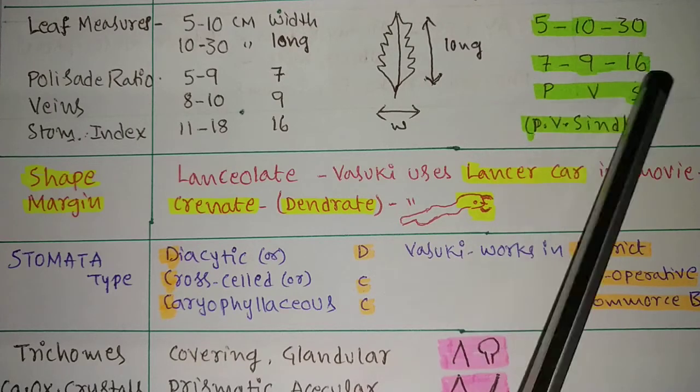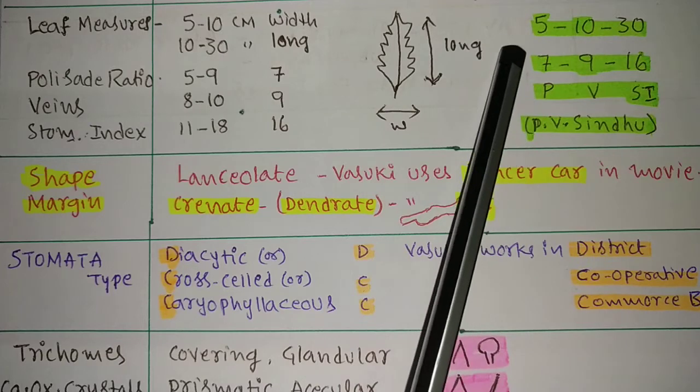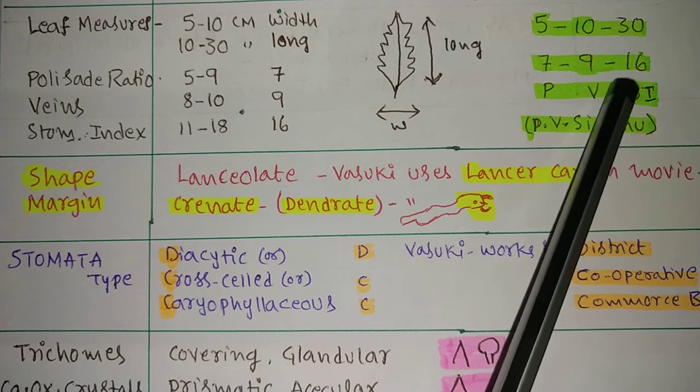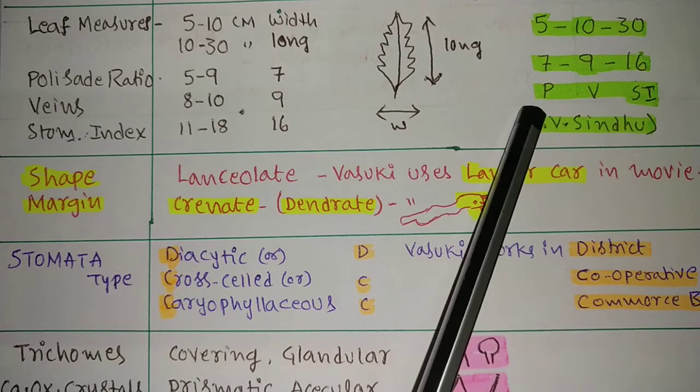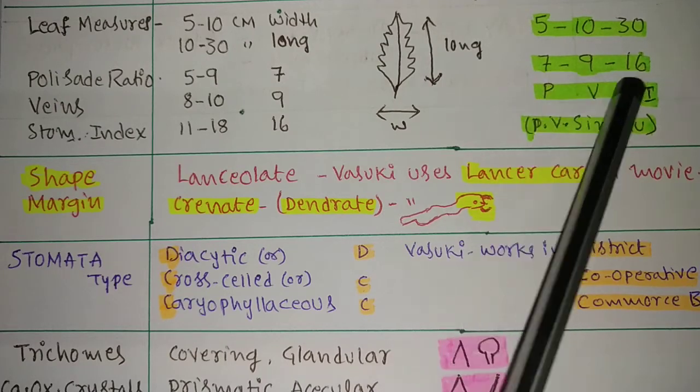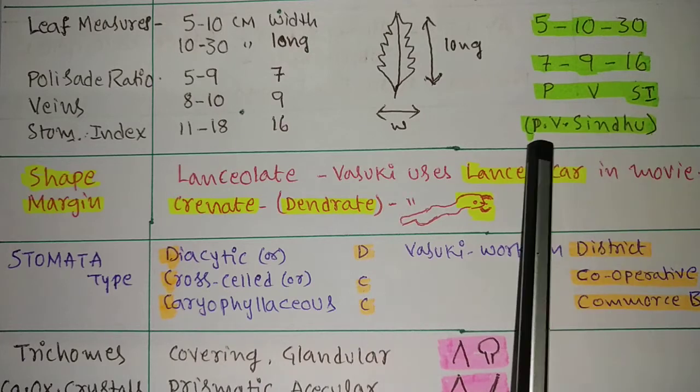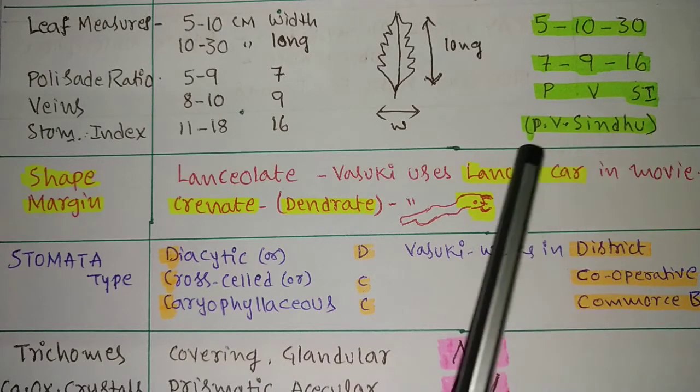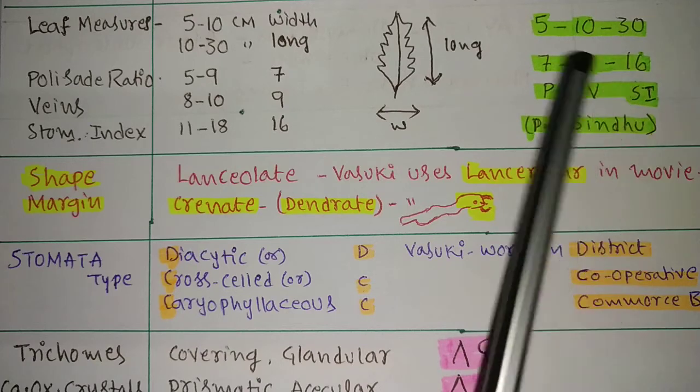And stomatal index: 10 to 18, so here I wrote 16 as a shortcut. If you add 7 plus 9, you will get 16. P V Si: P is palisade ratio, V is vein islet number, Si is stomatal index. P V Sindhu: 7, 9, and if you do total, you will get 16.